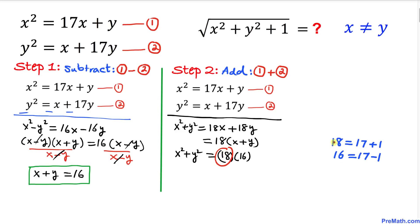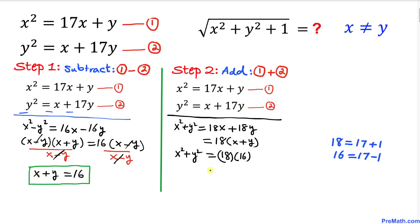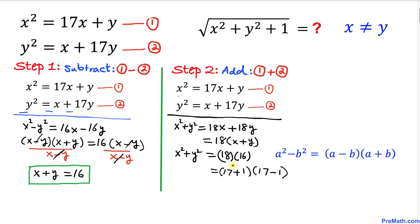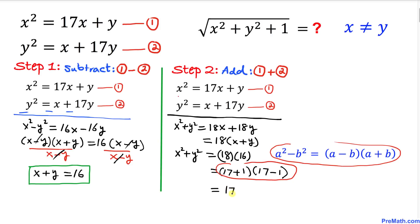Now let's tweak these numbers: 18 can be written as 17 + 1, and 16 can be written as 17 − 1. So 18 × 16 = (17 + 1)(17 − 1). This is a product of a sum and a difference, so we apply the formula again to get 17² − 1².